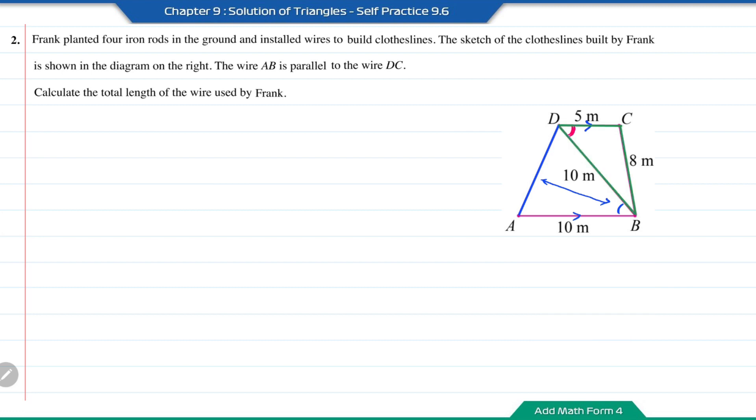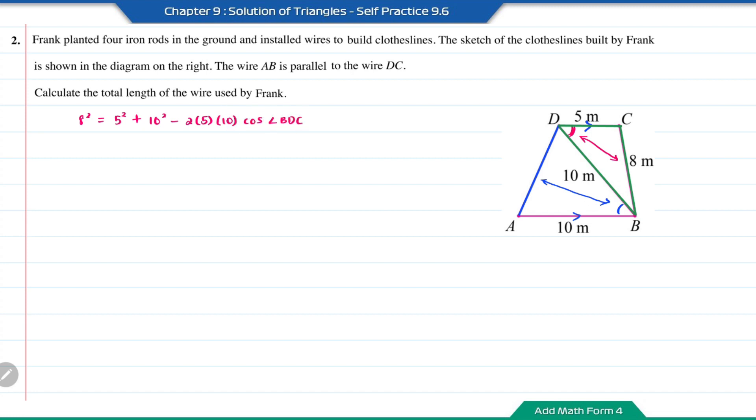So in triangle BDC, the length of three sides are given. Therefore we are able to find the angle BDC using the cosine rule. And the angle BDC is opposite the length BC. Therefore, x square is equal to 5 square plus 10 square minus 2 times 5 times 10 cos angle BDC. So cos angle BDC will equal to 5 square plus 10 square minus x square divided by 2 times 5 times 10. So the angle BDC will be the inverse cos of this answer, which is equal to 52.41 degrees.